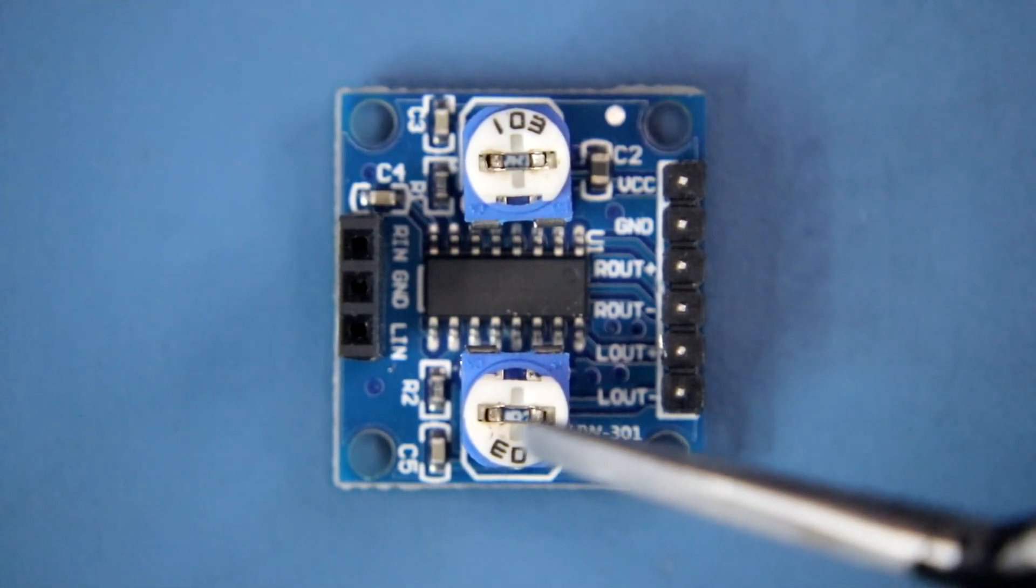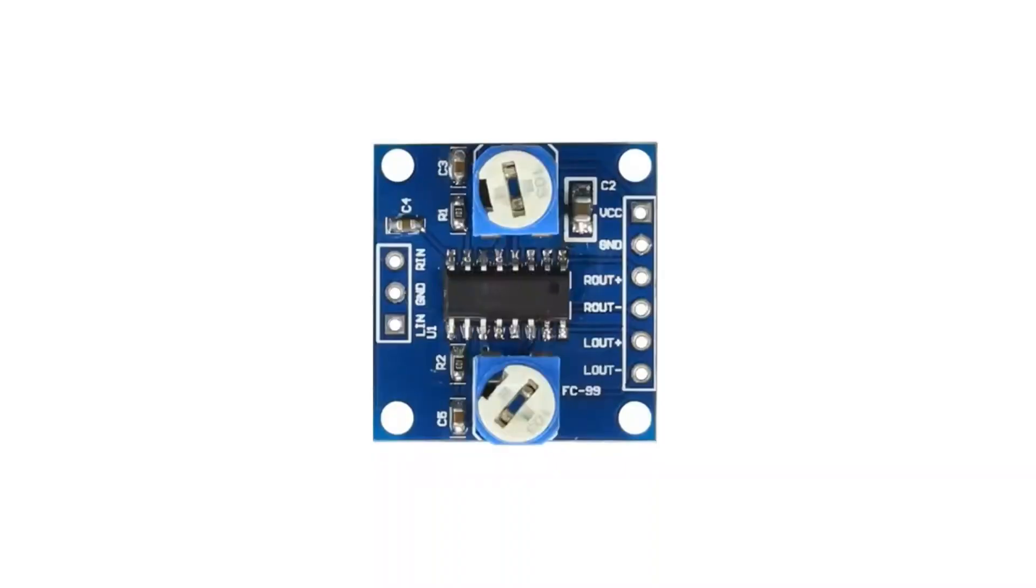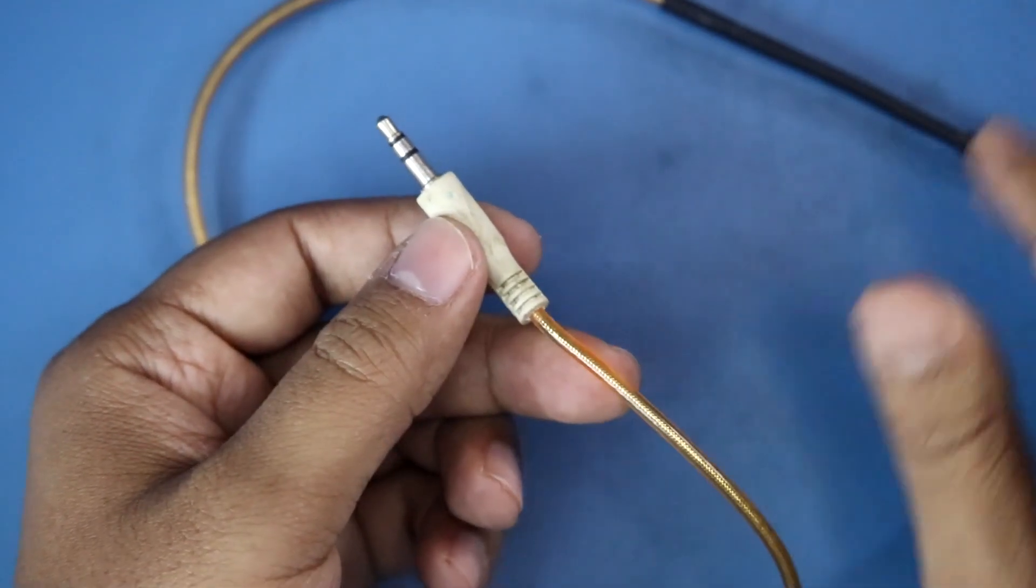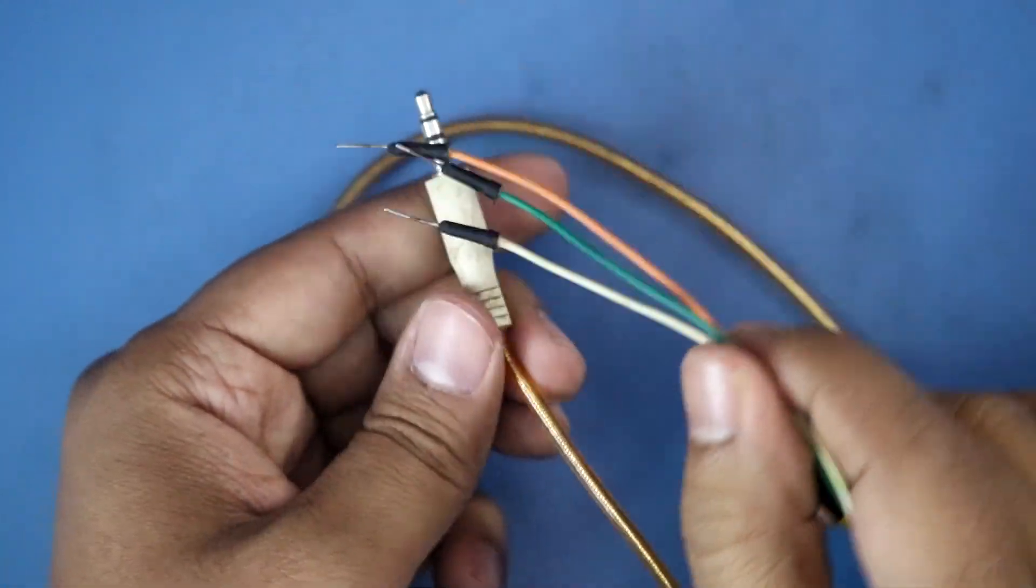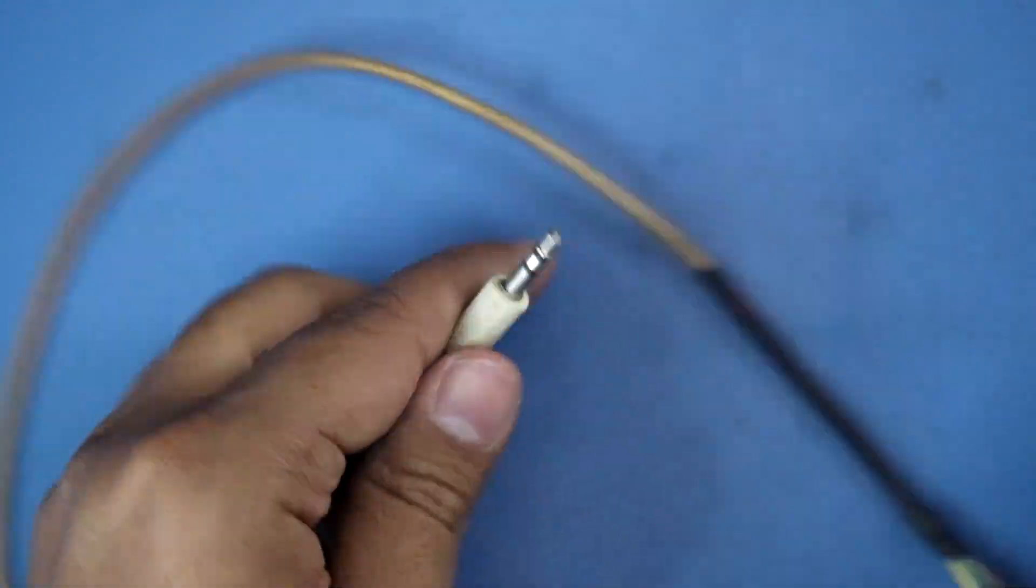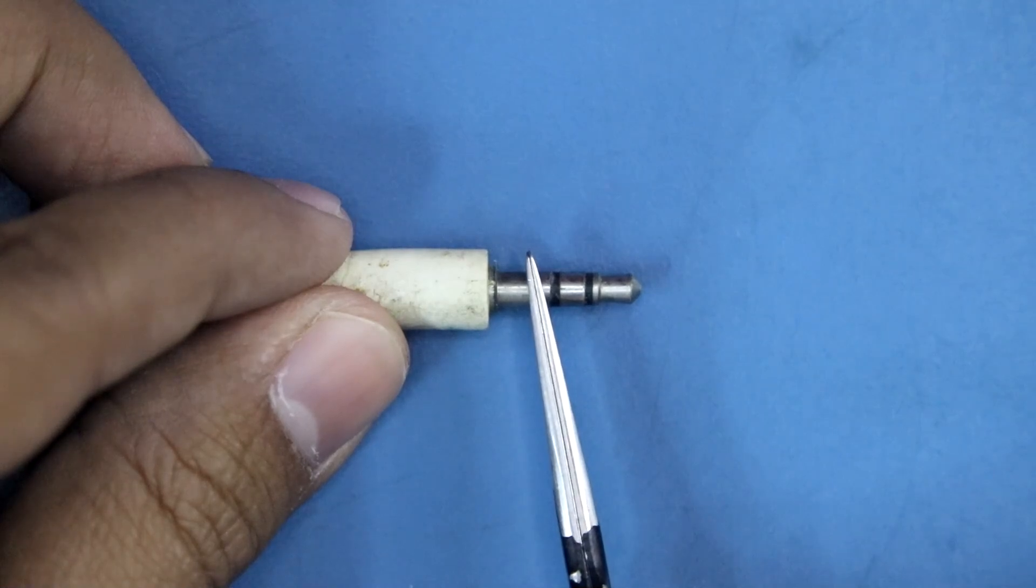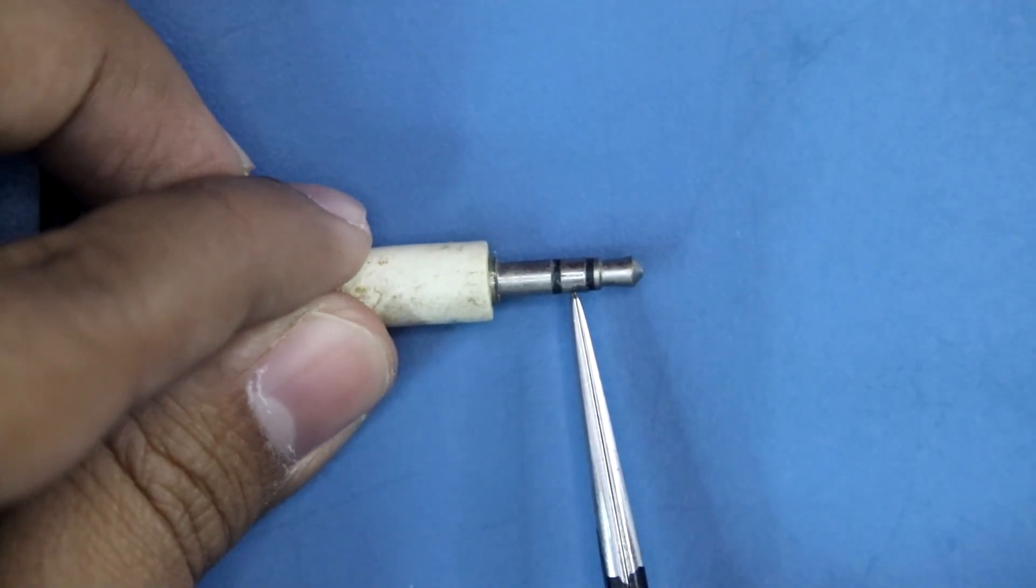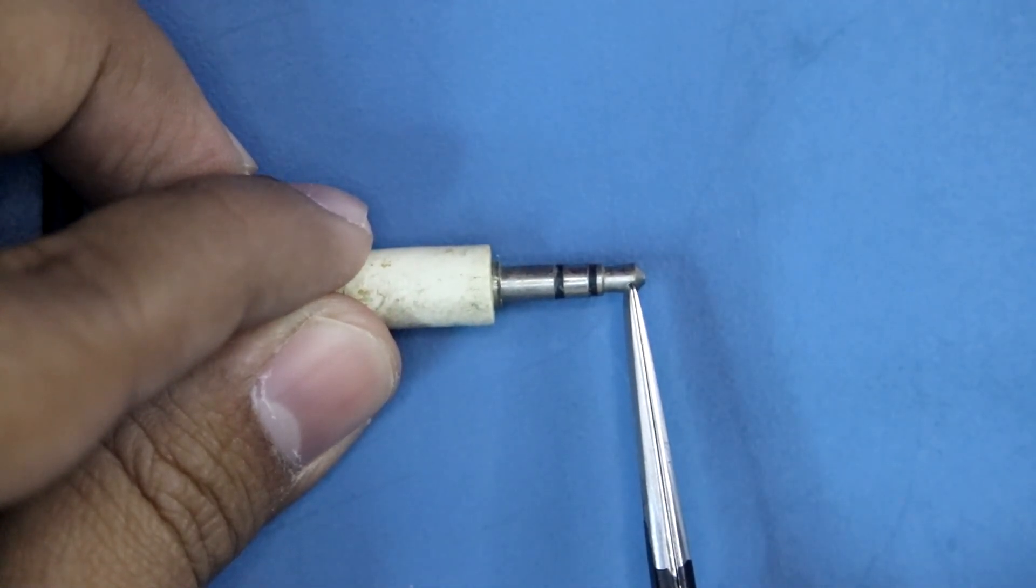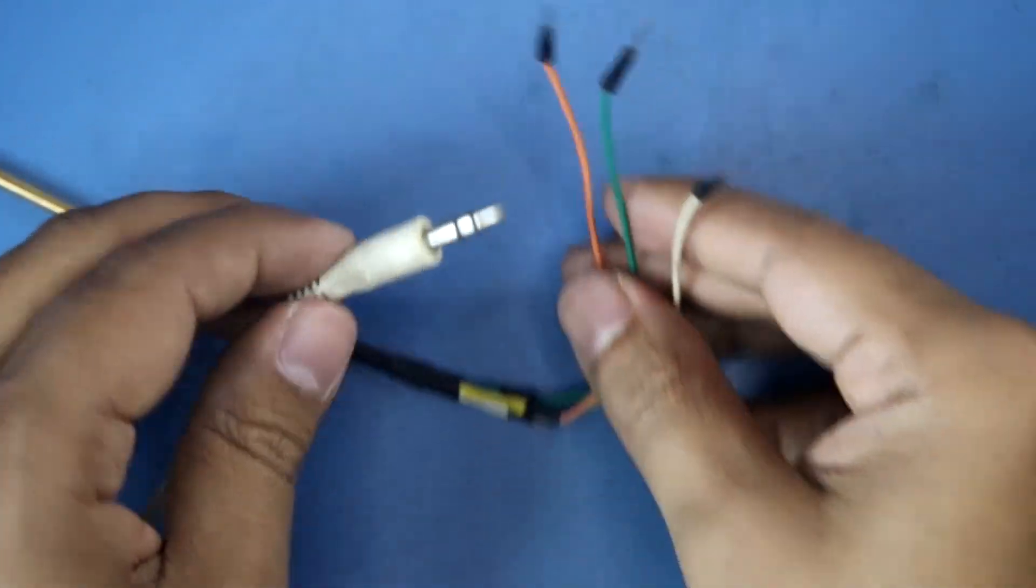Now let's see the simple connection. For the audio input we need a 3.5mm jack. This is a 3.5mm jack and it has three outputs: this pin is ground, the middle pin is right, and this is left.